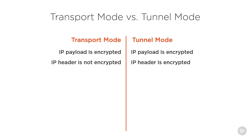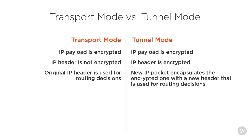For routing decisions in transport mode, the original IP header is used, while in tunnel mode a new packet encapsulates the encrypted one with a new header. This is because routers can't route the traffic with an encrypted header, so a new header is required to perform the necessary routing to get the traffic to its destination.